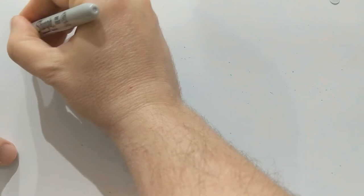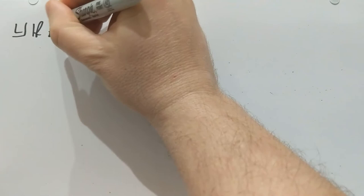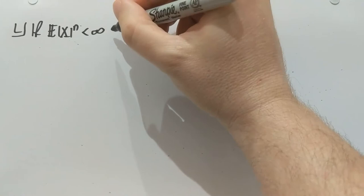This lemma says the following. Suppose that we have a random variable with a finite nth moment, absolute moment, for some n, at least one.